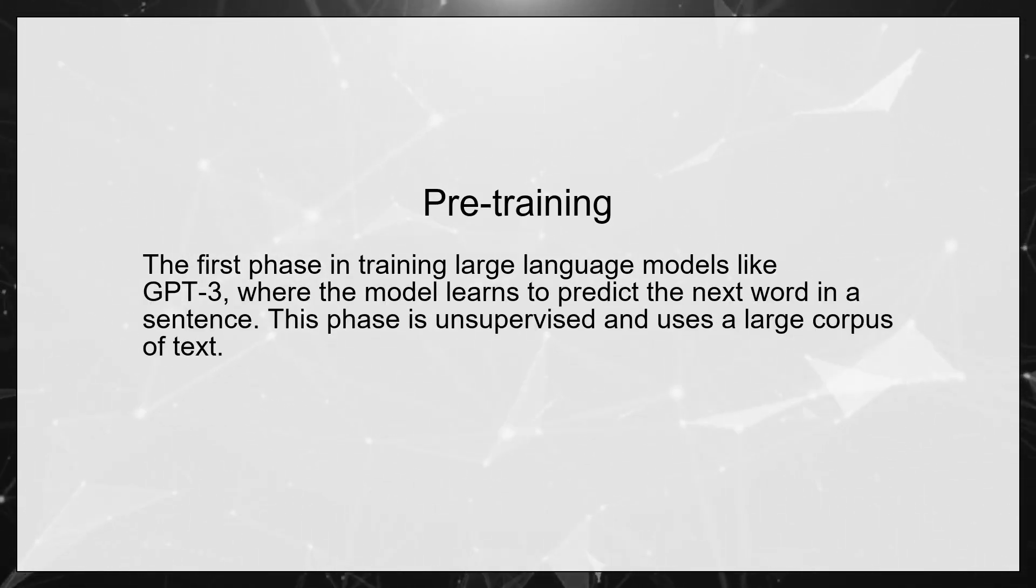Pre-training. The first phase in training large language models like GPT-3, where the model learns to predict the next word in a sentence. This phase is unsupervised and uses a large corpus of text.